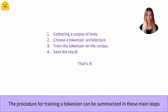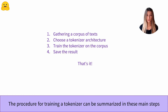To train a new tokenizer, it is first necessary to build a training corpus composed of raw text. Then you have to choose an architecture for your tokenizer. The simplest option is to reuse the same architecture as a tokenizer used by another already-trained model; otherwise, it is also possible to completely design a new tokenizer, but that requires more experience and attention. Once the architecture is chosen, you train the tokenizer on your corpus, and finally save the learned rules to be able to reuse the tokenizer.